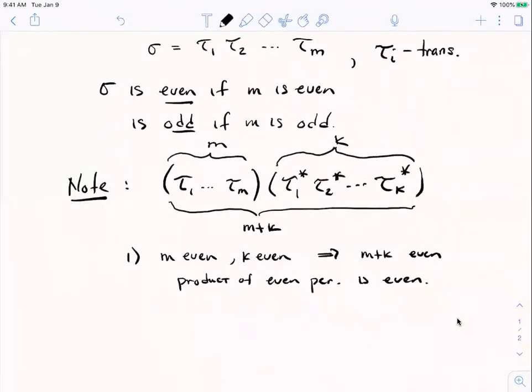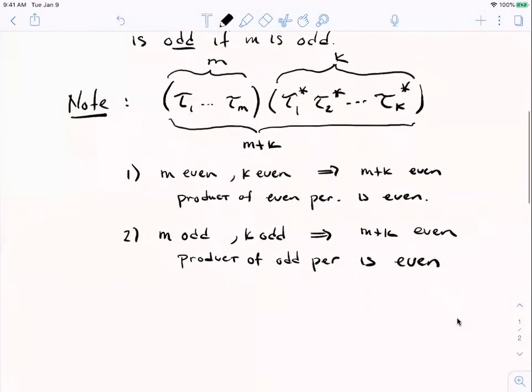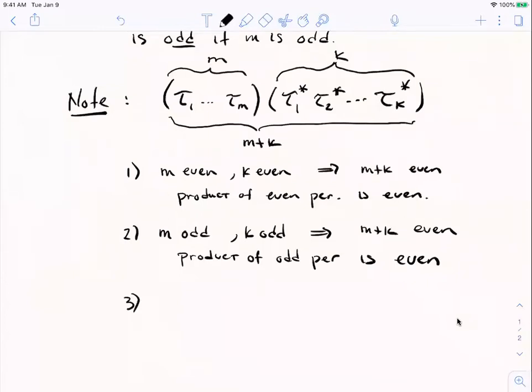That's going to be the closure part of our proof of the fact that An is a subgroup. Let's say more. What if m and k are both odd? Can you tell me about the sum of two odd numbers? The sum of two odd numbers is even. You multiply two odd permutations together and you get an even permutation. Product of odd permutations is even. Third, because of symmetry in final case, what if m is even and k is odd? Or if you like, m is odd, k is even. It doesn't matter. In either case, their sum is odd.